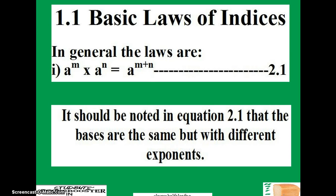Now let's go straight ahead to basic laws of index. The general laws as follows: Law number one, and I put here 2.1. If you have a raised to power m times a raised to power n, it equals a raised to power m plus n. You just add the exponents when you see multiplication. Just add the exponents, and this is provided the bases are the same. So that is why it should be noted here that the bases are the same but the exponents are different.